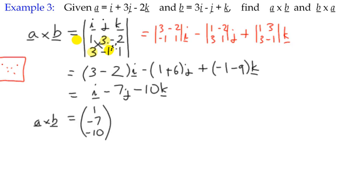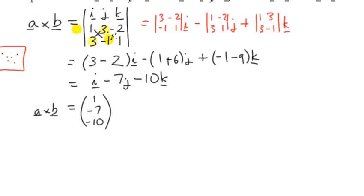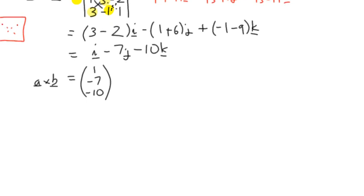In other words, a cross b equals in component form 1, negative 7, and negative 10. That's the vector product. That vector 1, negative 7, negative 10 is a vector which is perpendicular to both vectors a and b.